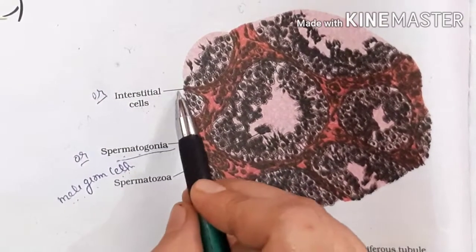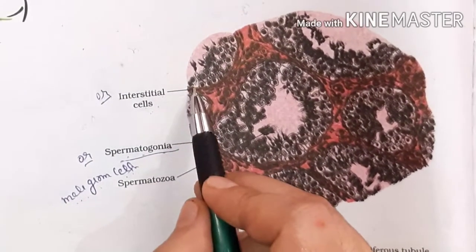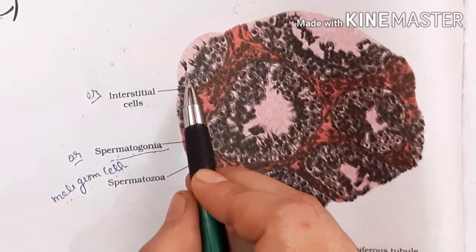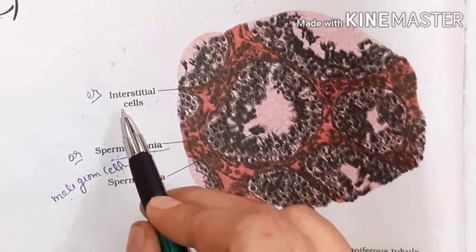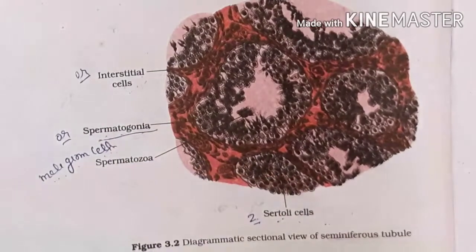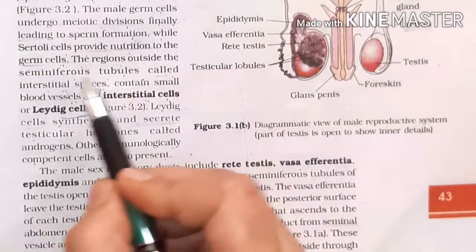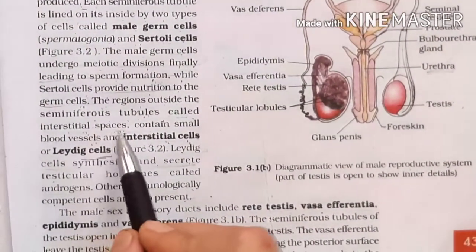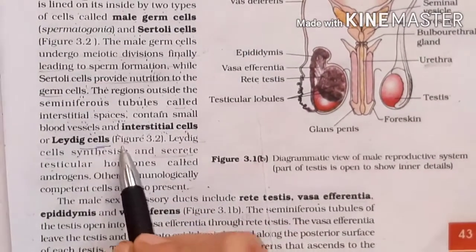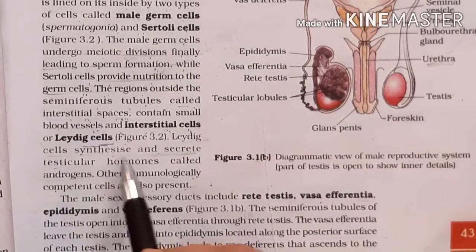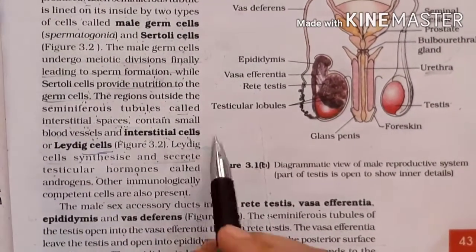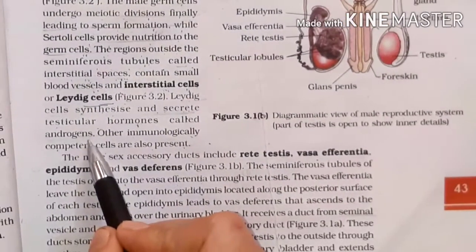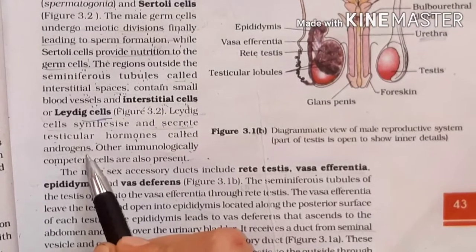The male hormone is testosterone. It belongs to the group called androgens. Leydig cells synthesize and secrete testicular hormones called androgens, and testosterone — the male sex hormone — is secreted by Leydig cells.